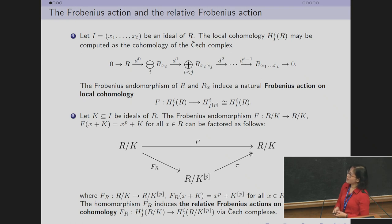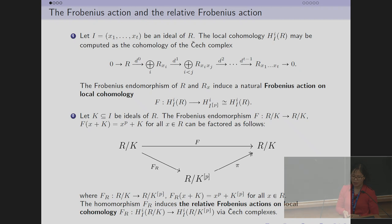If I is generated by x₁ to xₜ, then the local cohomology module HᵢI(R) may be computed as the cohomology of the Čech complex. The Frobenius endomorphism of R and its localization induce a natural Frobenius action on local cohomology.